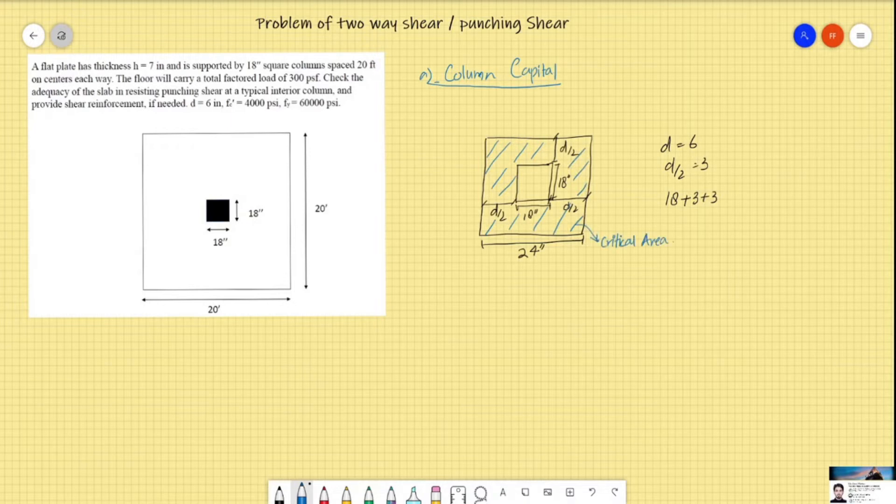And the critical parameter b0 will be equal to 4 times (c plus d), which is for square columns. So it will be 4 into (18 plus 6), equal to 96 inches. This is our critical parameter.